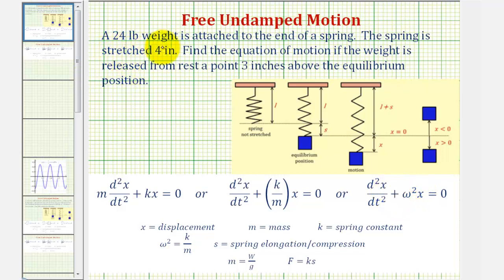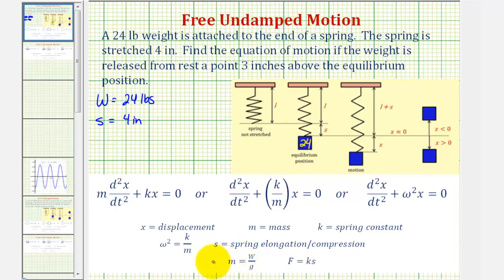We're given that a 24-pound weight is attached to the end of a spring, which means the weight w would be 24 pounds. The spring is stretched four inches, so the spring elongation s is four inches. Since we'll be using g equals 32 feet per second squared, we want to convert this to feet. Four inches equals four-twelfths of a foot, which is one-third of a foot.